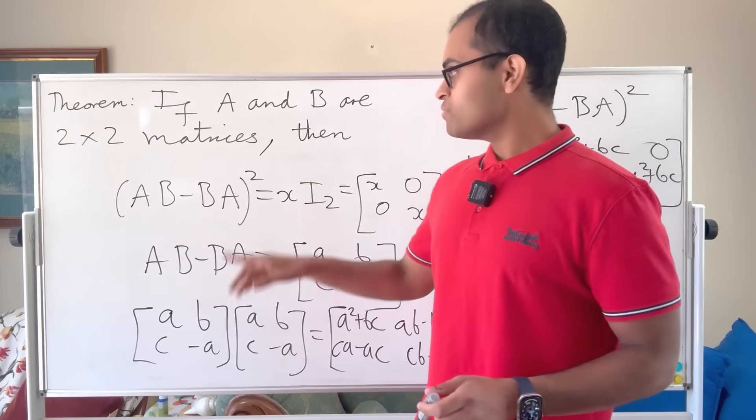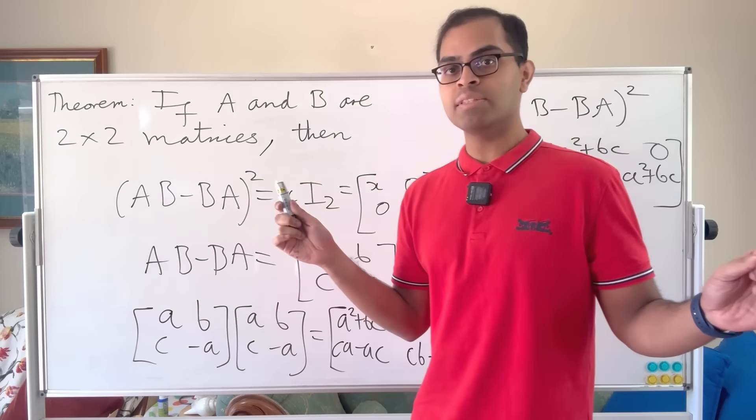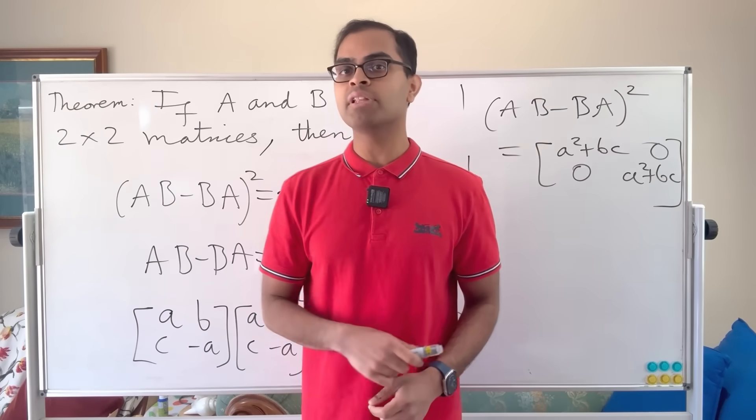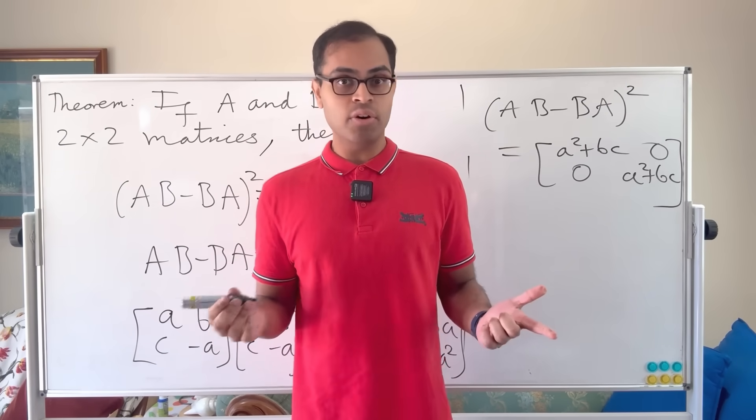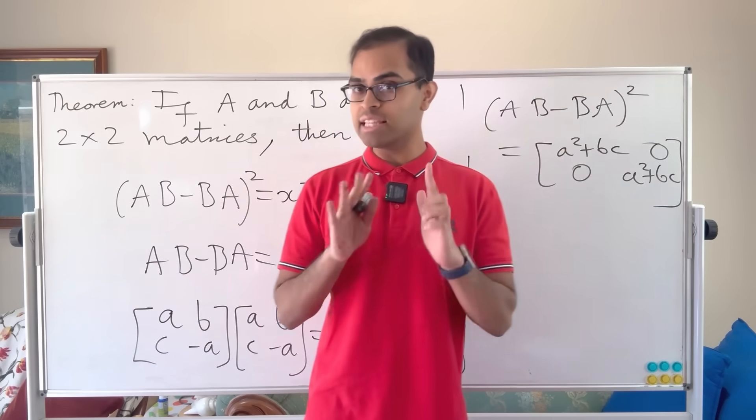I want you to drop a comment. This is false if you have three by three matrices. It's not always going to be that AB minus BA squared is a scalar multiple of the identity. Can you drop a comment and tell me what example there is? And do you have other alternative approaches for solving this? I'd love to hear it.